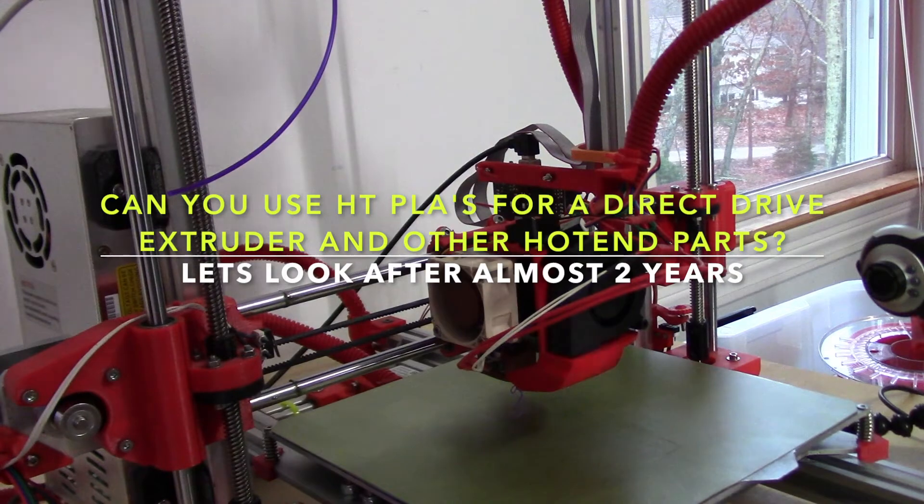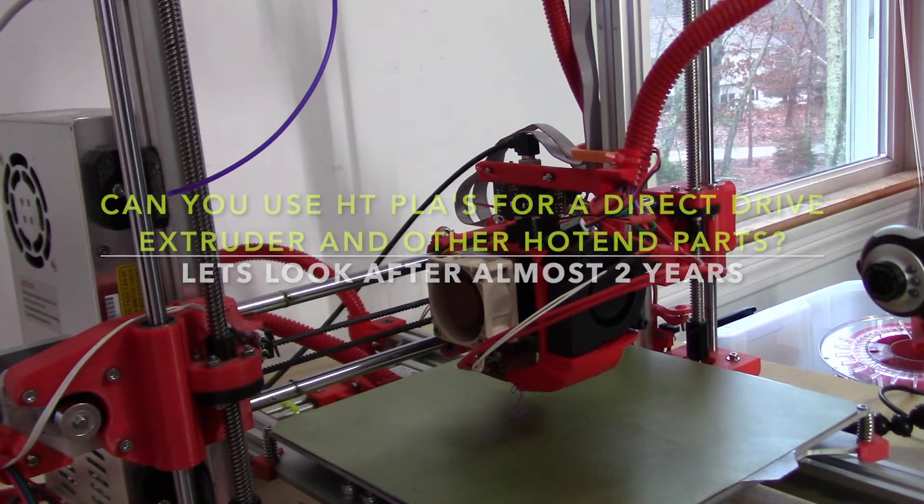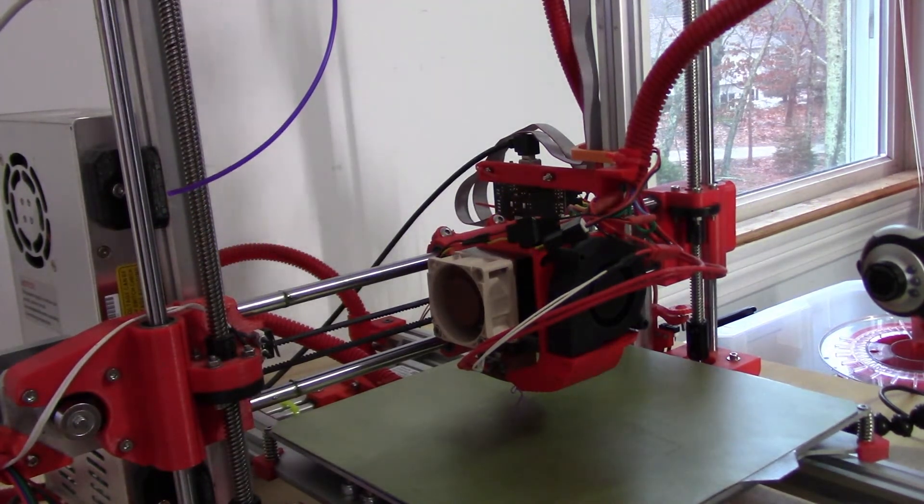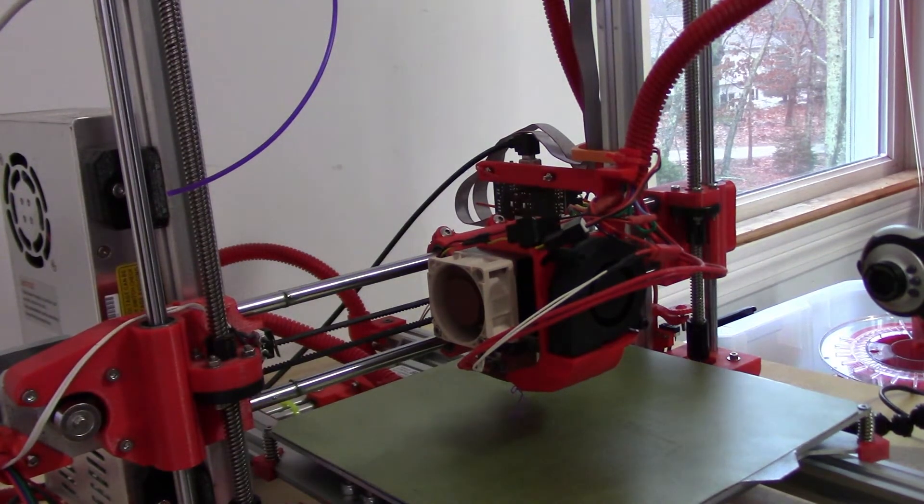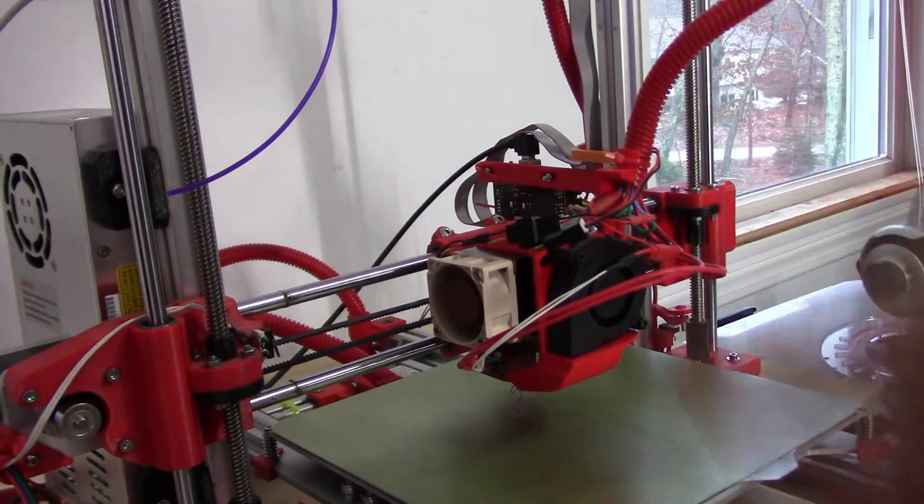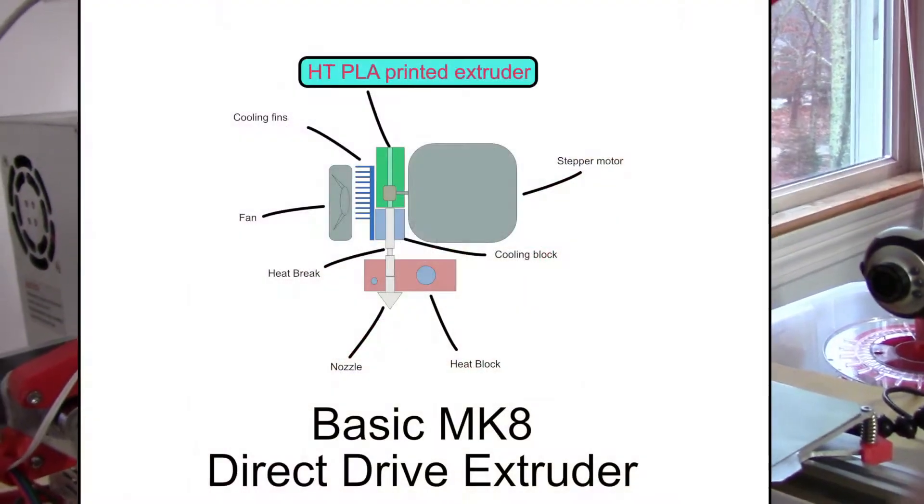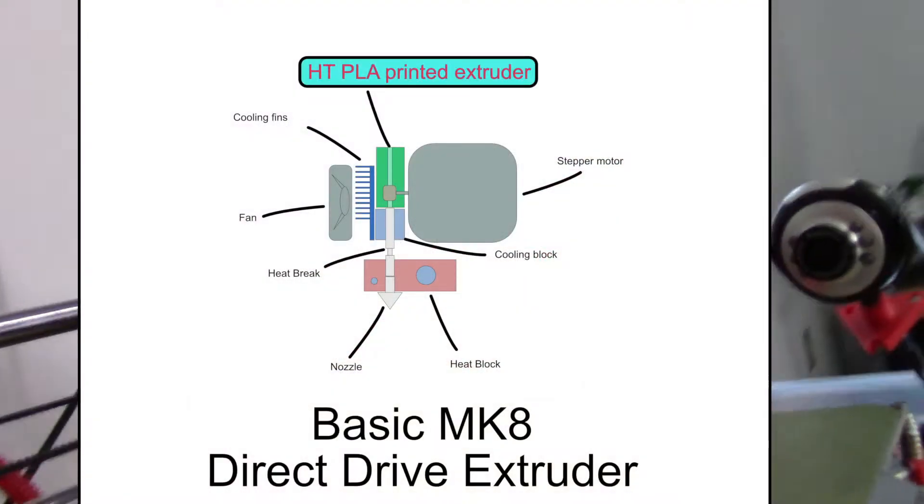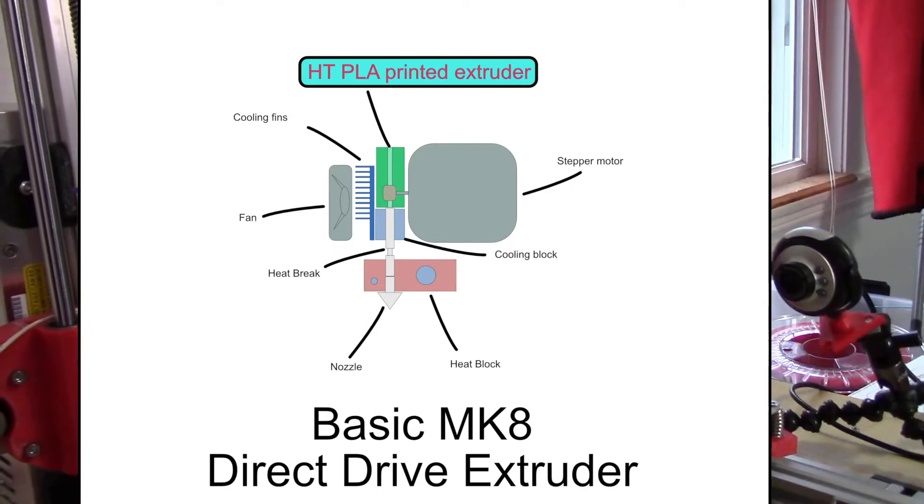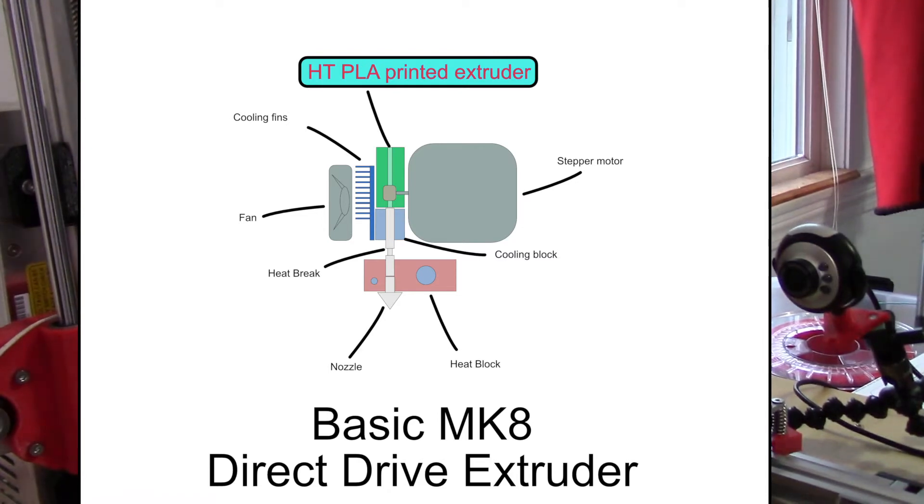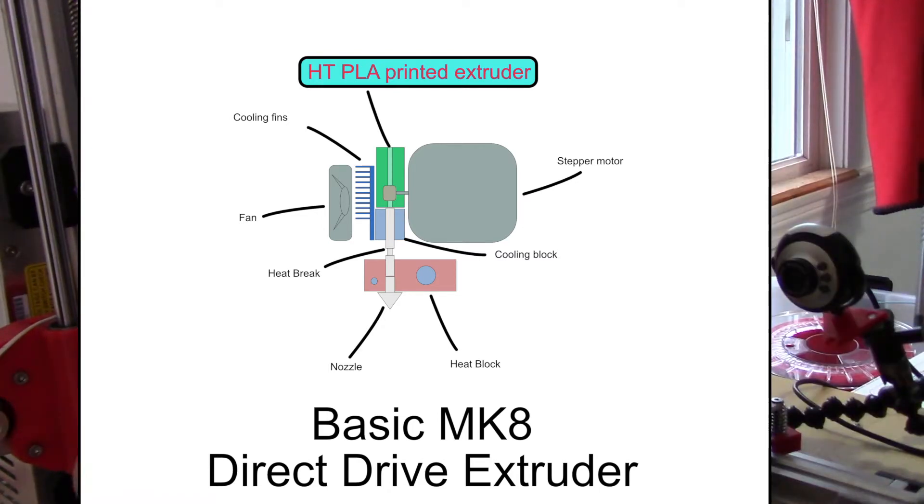So recently we were having a discussion about using PLA for hot ends and extruders. Now this is a standard MK8 hot end, and I don't know if I can get in there so you can see how it works. It has a heat break tube that goes up into a big aluminum block, and then that aluminum block has a heat sink that's strapped on with this fan.